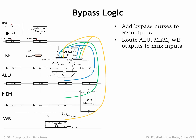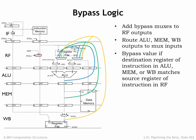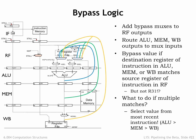For the bypassing example, we used the blue bypass path during cycle 3 to get the correct value for R2. The bypass MUXs are controlled by logic matching the number of the source register to the number of the destination registers in the ALU, MEM, and WB stages, with the usual complications of dealing with R31. What if there are multiple matches — if the RF stage is trying to read a register that's the destination for instructions in both the ALU and MEM stages? We want to select the result from the most recent instruction, so we'd choose the ALU match first, then MEM, then WB, and finally the output of the register file.